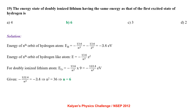The energy state of doubly ionized lithium having the same energy as that of the first excited state of hydrogen. Energy of nth orbit of hydrogen = −13.6/n², so for n=2: −3.4 eV. Energy of nth orbit of hydrogen-like atom = −13.6Z²/n². For doubly ionized lithium (Z=3): −122.4/n². Setting −122.4/n² = −3.4 gives n = 6.